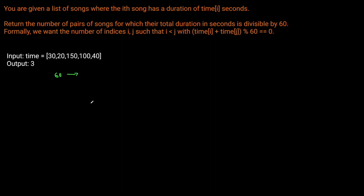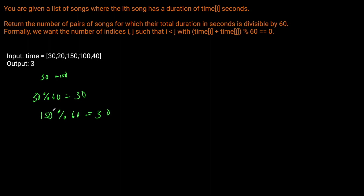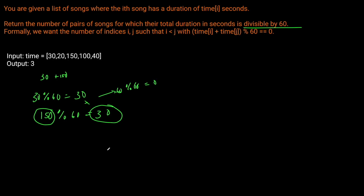What about songs that aren't immediately divisible by 60? For example, 30 plus 150: 30 modulo 60 equals 30, and 150 modulo 60 is also 30. So for 150 to have a pair that makes the sum divisible by 60, we need another song whose remainder is also 30. That way, when we add them and take the modulo, they'll sum to a multiple of 60, which modulo 60 is zero.